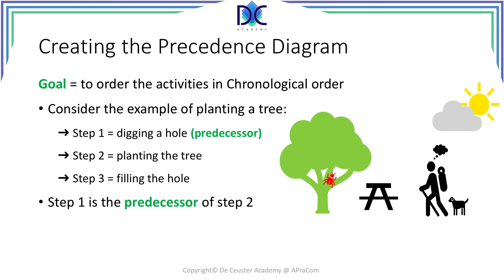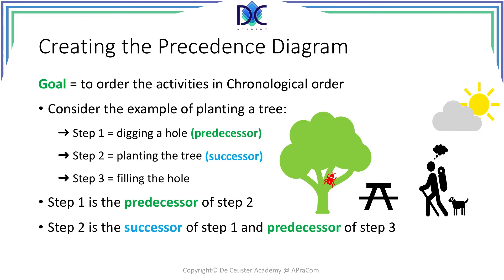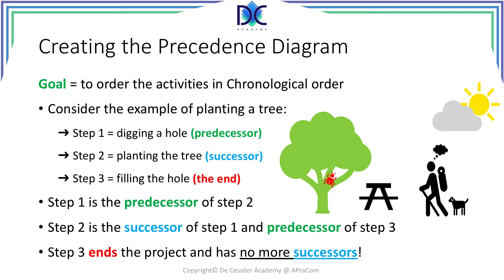Step 1 we call the predecessor of step 2. Step 2 is the successor of step 1, but it's also the predecessor of step 3. Finally, step 3 ends the project and there are no more successors. The project can start with activities that have no predecessor — step 1 has no predecessor. And the project ends when there are no more successors: when we fill the hole, all the work is done and the project is finished.